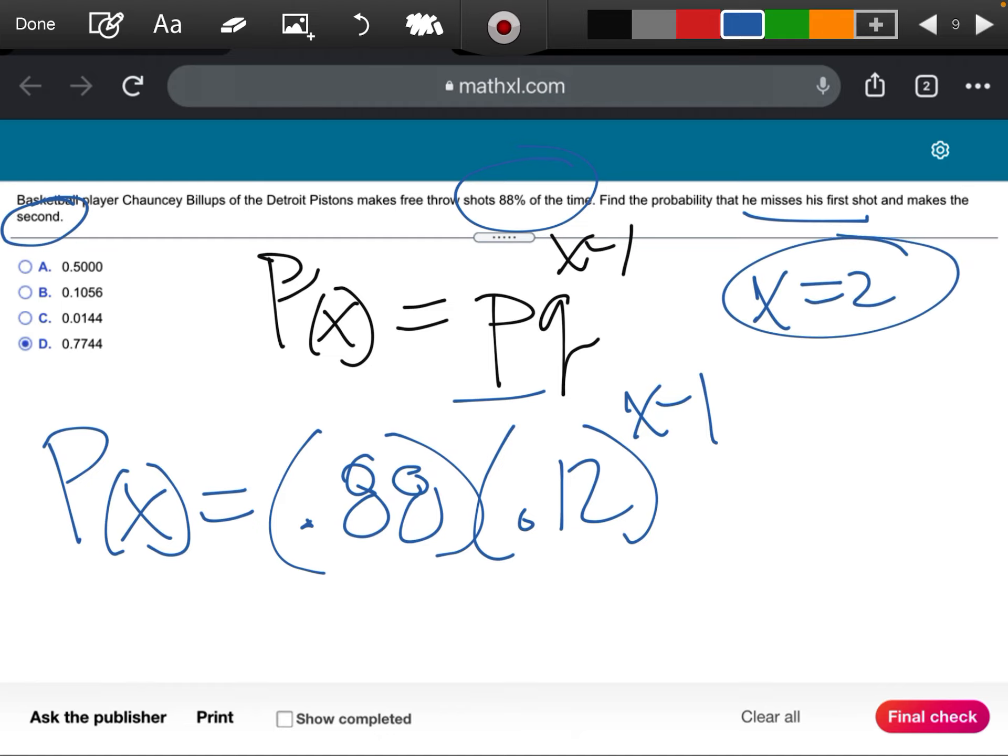We're going to miss the first shot and make it on the second. If we're going to make it on the second, that means my x is going to be equal to 2. To find the probability at 2, I'm going to take 0.88 times 0.12. Remember, if x is 2, this is going to be 2 minus 1, which is just the power 1.